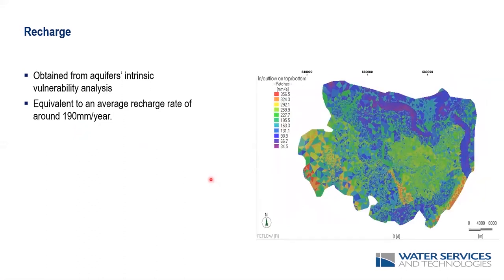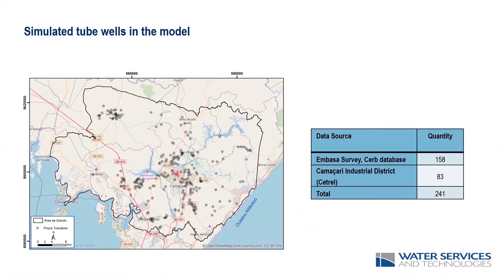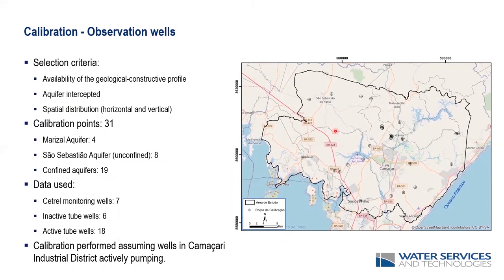The abstraction wells used to develop the model — about 240 total — were used in terms of their geological profiles, water levels, and hydraulic conductivities where available. From these, about 30 tube wells were selected for calibration based on specific criteria: about four from the Marizal aquifer in the central part of the study area, and 27 wells from the main aquifer system, both unconfined and confined layers.